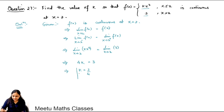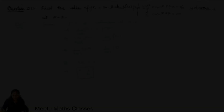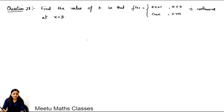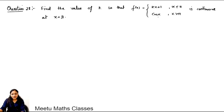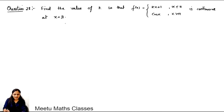So 4k equals 3, giving k equals 3/4. The next question: find the value of k so that f(x) equals kx plus 1 when x is less than or equal to π, and cos x when x is greater than π, is continuous at x equals π.